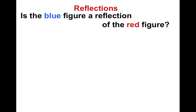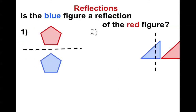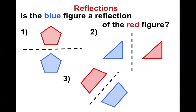The first thing we want to make sure you can do is be able to see if something is a reflection or not. I've got three possibilities here. Which one is a line of reflection, or is there more than one? In this first situation, this would not be a reflection, because the point here is closest to the line of reflection, but on the other side the point is far away. This would be a simple translation.